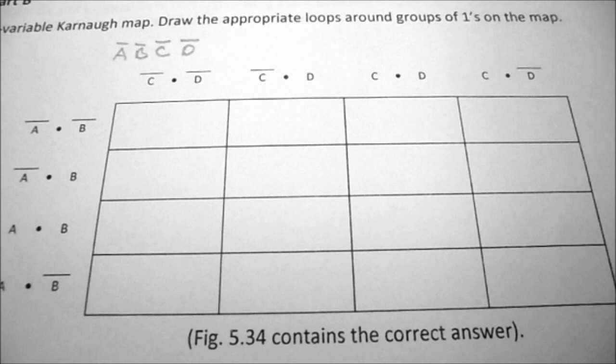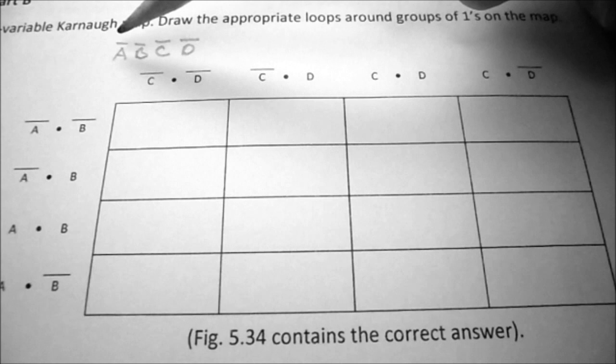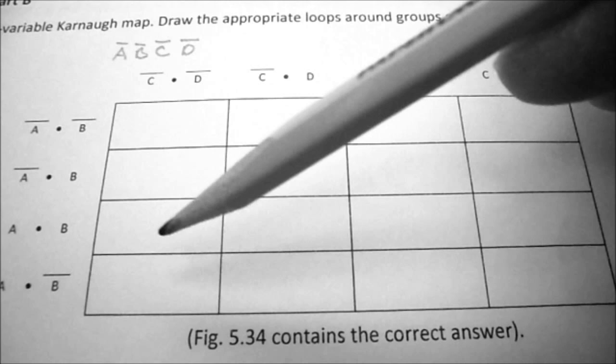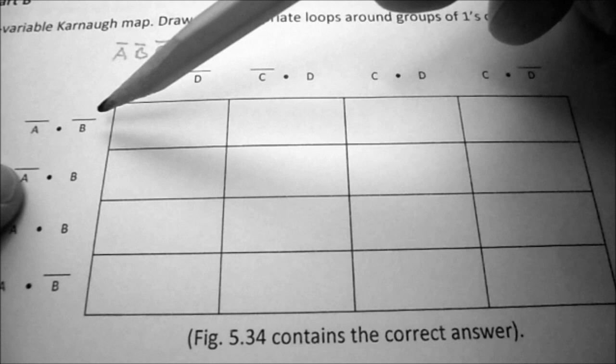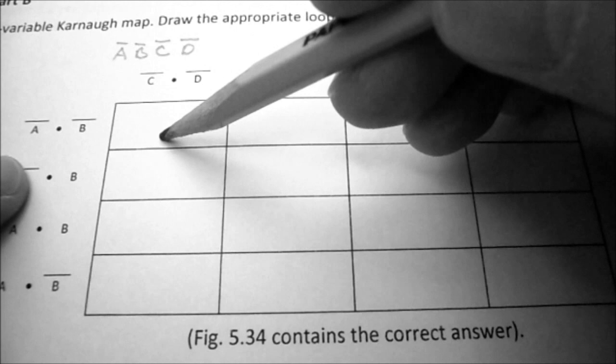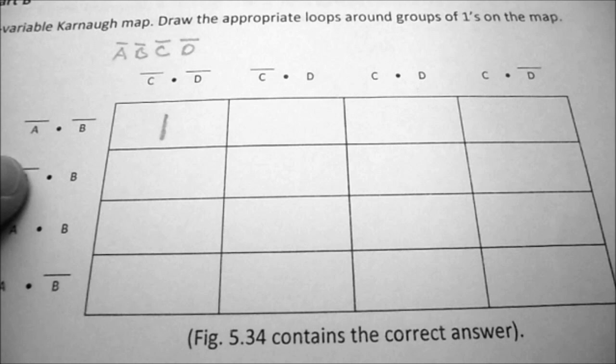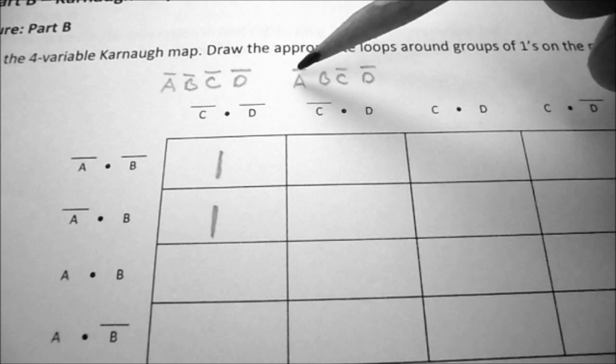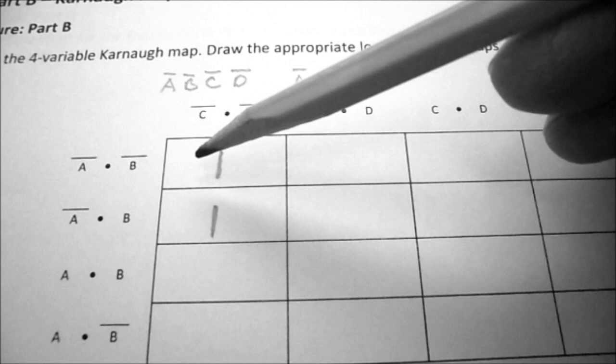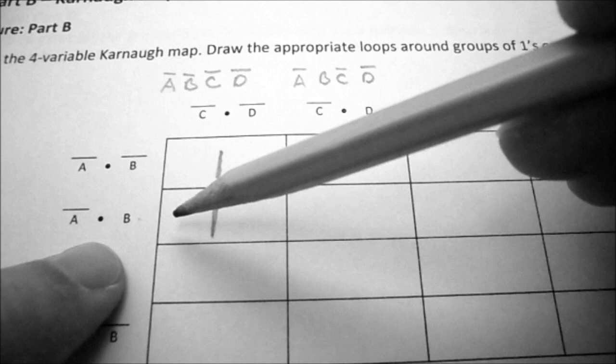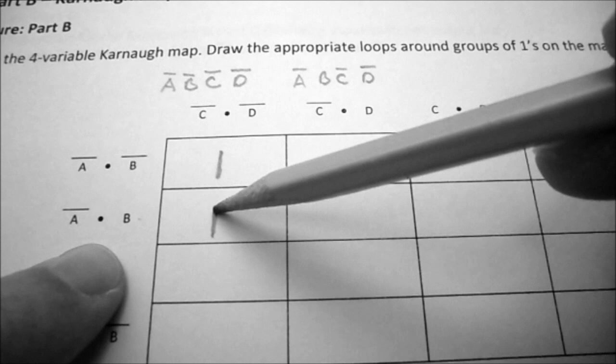This is called the unsimplified sum of products Boolean expression. Our next step is to fill in a Karnaugh map, and this helps us simplify the circuit. Our first expression is A̅B̅C̅D̅. On our grid here, we're going to be looking for A̅B̅ where it intersects with C̅D̅, and that will be our first one. Then you do this for each of the expressions for the truth table. The second expression was A̅BC̅D̅, so you look for A̅B where it intersects with C̅D̅.